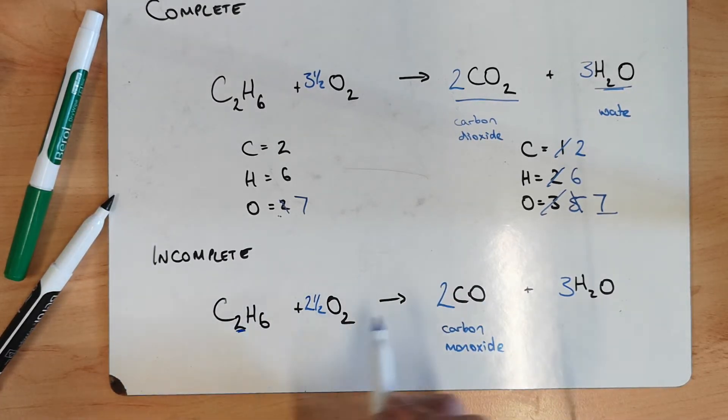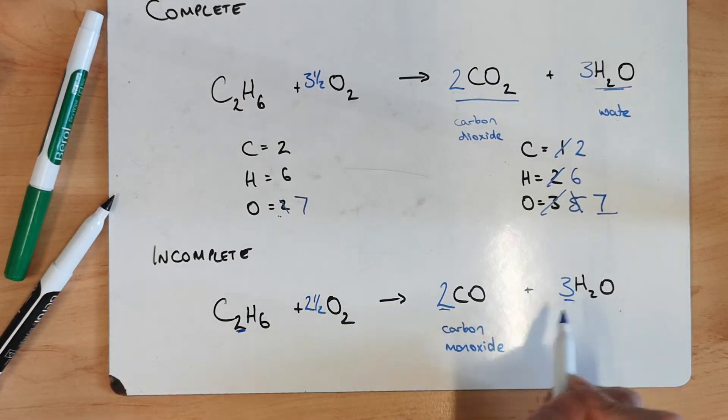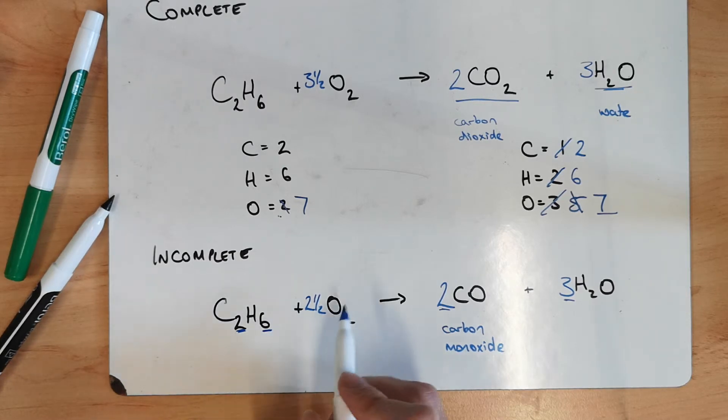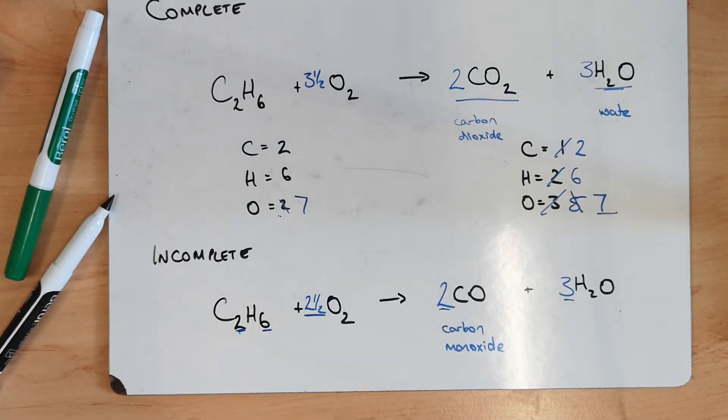So they're always linked together. This number is always this number divided by two. And this number is always this number plus a half. So if it's C3H8. That'd be three and a half. C4H10. Four and a half. That's just for incomplete. Use it to check your answers rather than answering them.